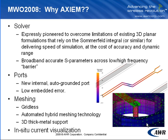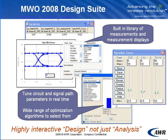One of the EM solvers you may want to use is Axiom. Axiom scales tremendously, especially as you get into larger numbers of unknowns encountered with multi-layered designs or very long structures such as differential striplines. It's gridless, with automatic hybrid meshing that produces a denser mesh toward the edges — to capture current — and sparser toward the center. There's 3D thick metal support, speed, and accuracy. Axiom is a great complement to both the extract flow and ACE because of its high accuracy and speed.